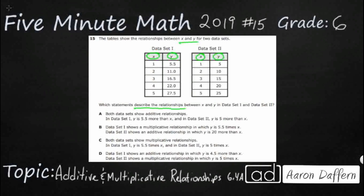So since our x and y are in two separate columns, let's look side to side. Let's look from 1 to 5.5, 2 to 11.0, so on and so forth. Let's see if we can figure out the rule, and that will help us with the descriptions down below.